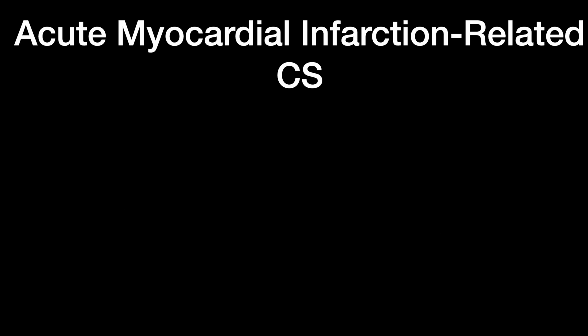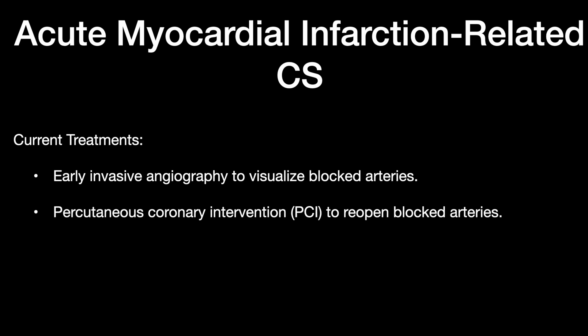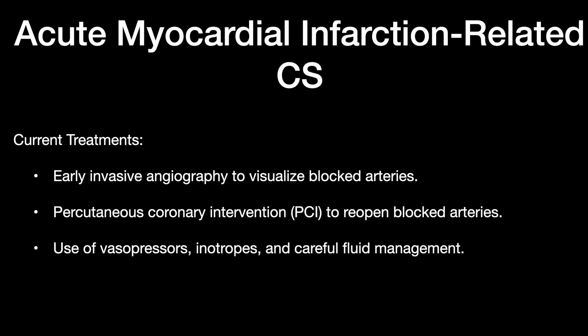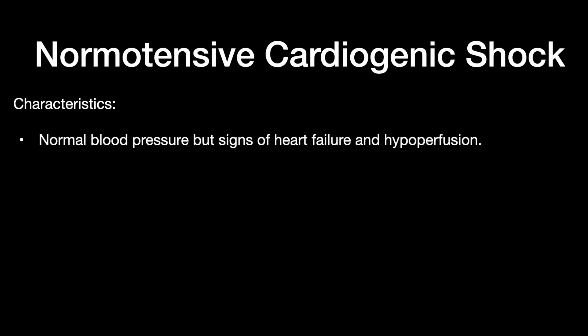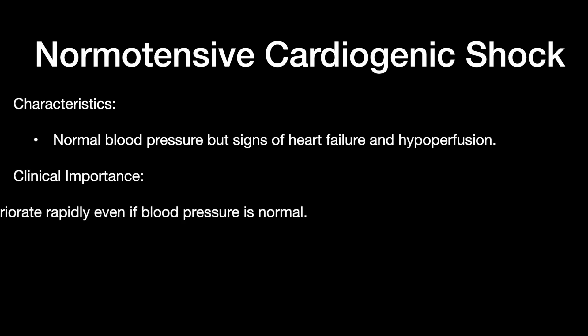How do we manage acute myocardial infarction? Current treatment guidelines recommend early invasive angiography to visualize blocked arteries, PCI to reopen the blockage, use of vasopressors and inotropes, and careful fluid management. In normotensive cardiogenic shock, it is characterized by normal blood pressure but similar signs of heart failure and hypoperfusion.